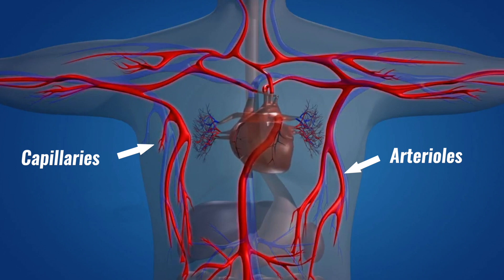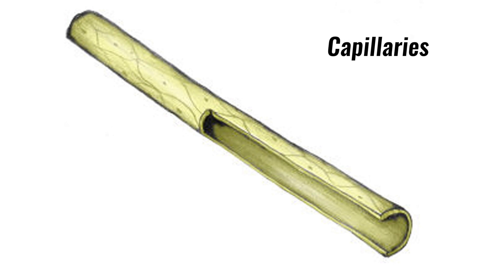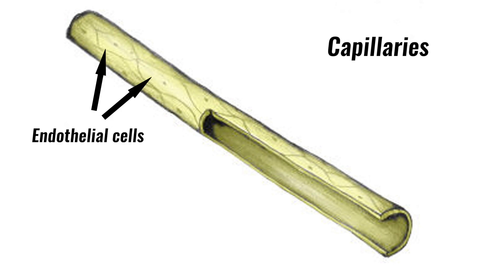Unlike veins and arteries, the main function of capillaries is not transporting blood. They are specially designed to allow the movement of oxygen, carbon dioxide and other nutrients to and from the surrounding tissues. Capillaries have very thin walls comprised only of endothelial cells, which allows substances to move through the cell wall with ease.